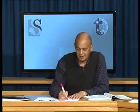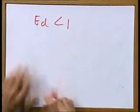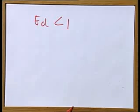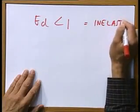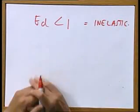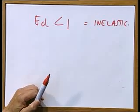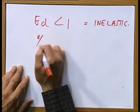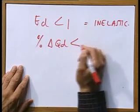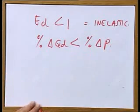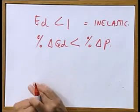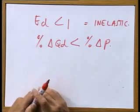The second category of elasticity: when ED is smaller than 1, we are saying that the demand for the product is inelastic. When the demand for the product is inelastic, it simply means that the percentage change in the quantity demanded is smaller than the percentage change in the price of the product. This is the meaning of ED smaller than 1 — the demand for the product is inelastic.